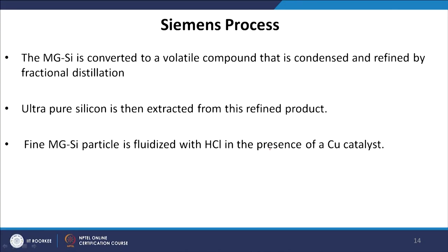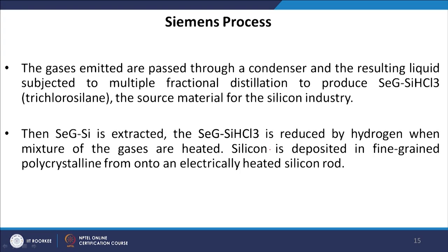The Siemens process is adopted in industry to make polycrystalline silicon starting from metallurgical grade silicon. In this process, metallurgical grade silicon is converted to a volatile compound that is condensed and refined by fractional distillation. Ultra-pure silicon is then extracted from this refined product. Fine metallurgical grade silicon particles are fluidized with HCl (hydrochloric acid) in the presence of a copper catalyst. The emitted gases are passed through a condenser and the resulting liquid is subjected to multiple fractional distillations, where we vary pressure to extract the required materials.